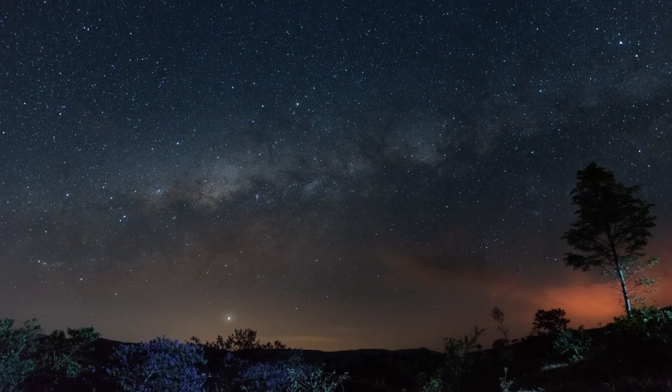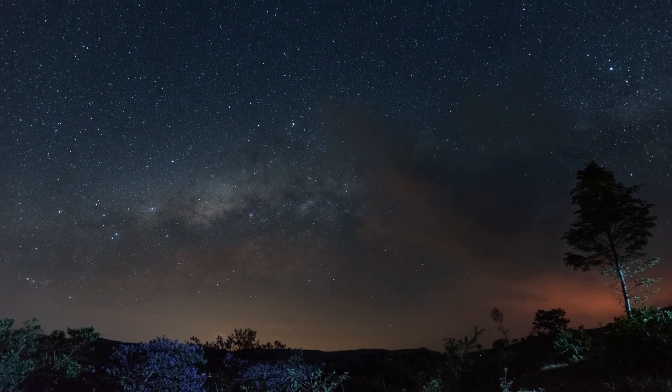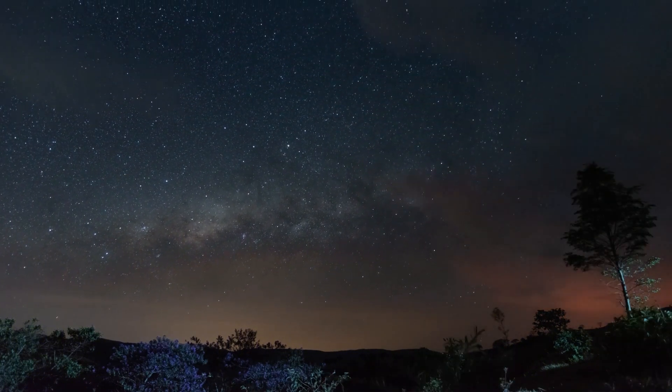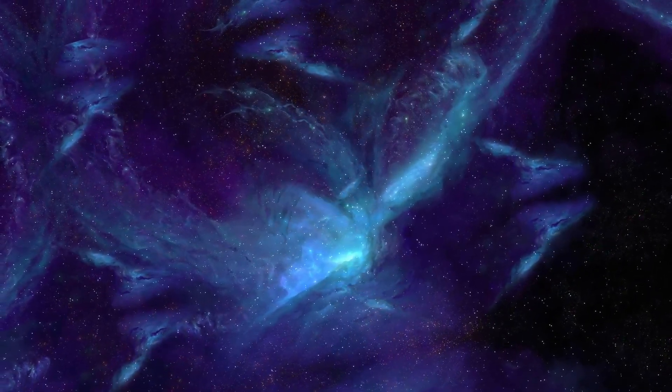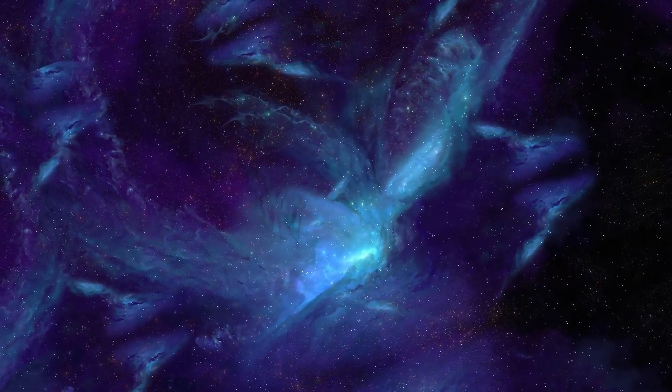Can you imagine a single star dwarfing our entire solar system? To provide some perspective on the sheer enormity of Betelgeuse, if it took the place of our sun, its edges would extend all the way to Jupiter.